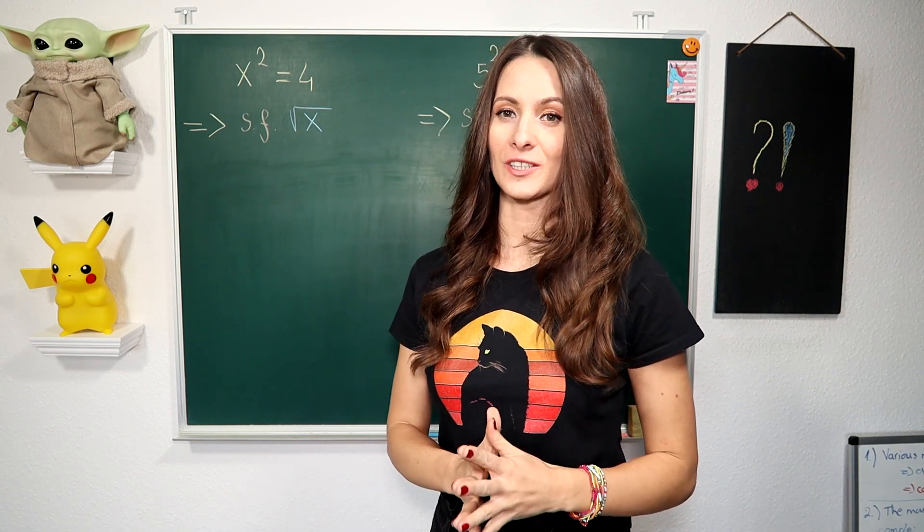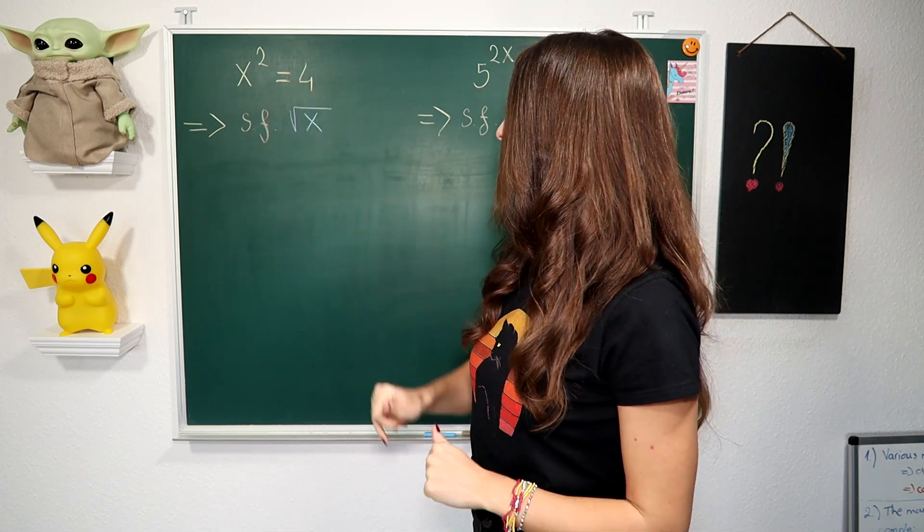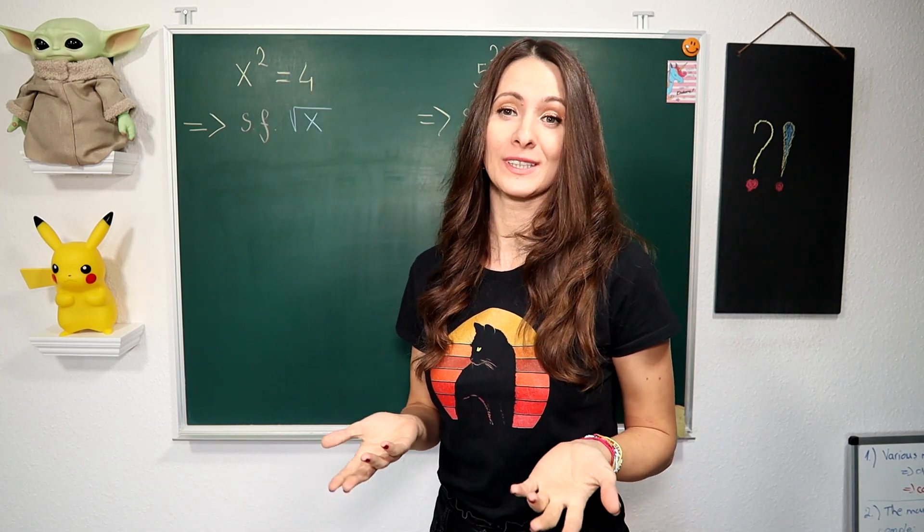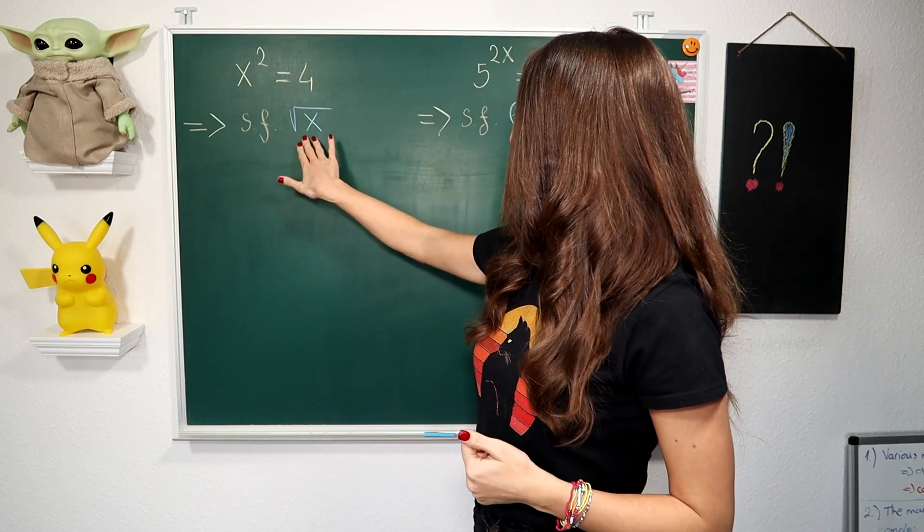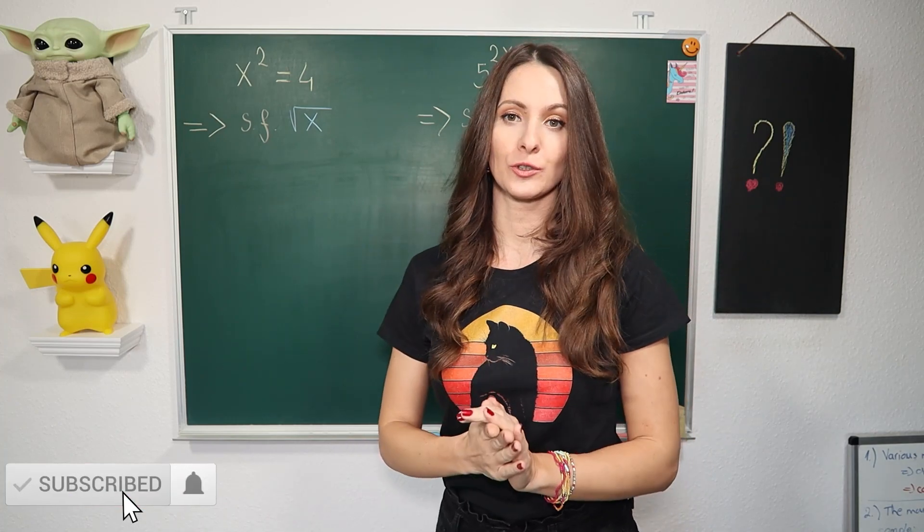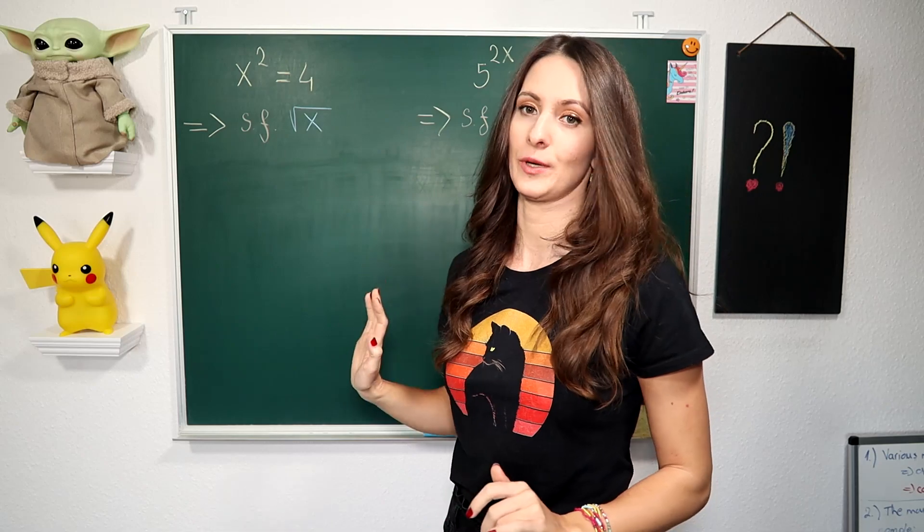As an introduction to this function, let us take a look at the quadratic equation. Here we have x² = 4. We all know for solving this equation we have to take the square root. That means this equation is solvable in terms of the special function √x, which is the inverse of a simple quadratic equation.